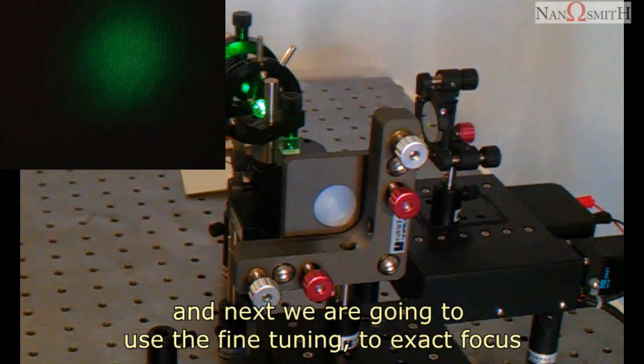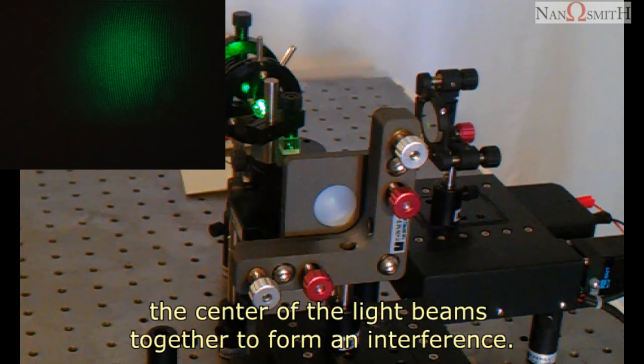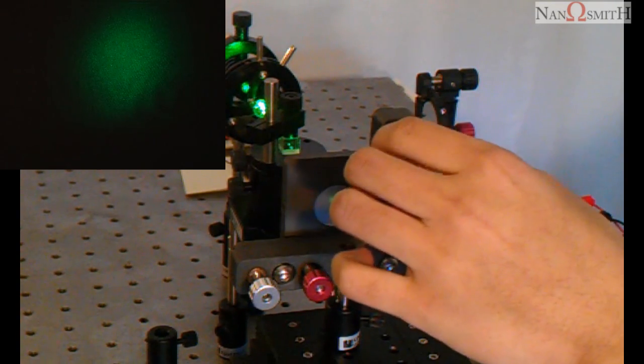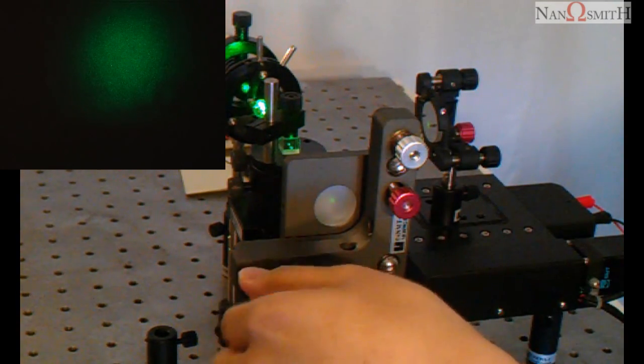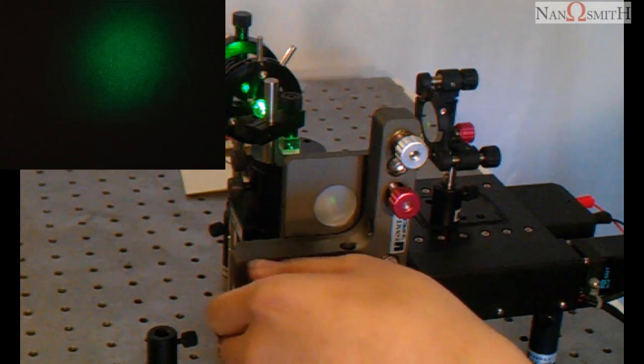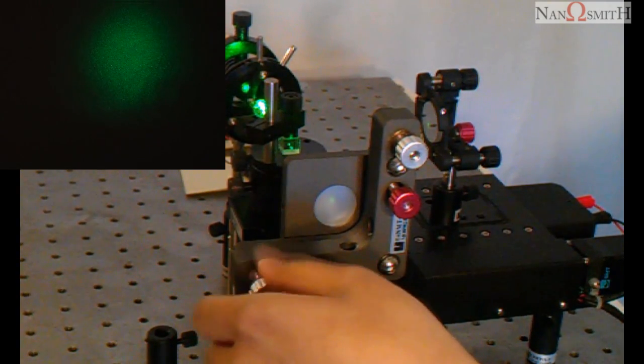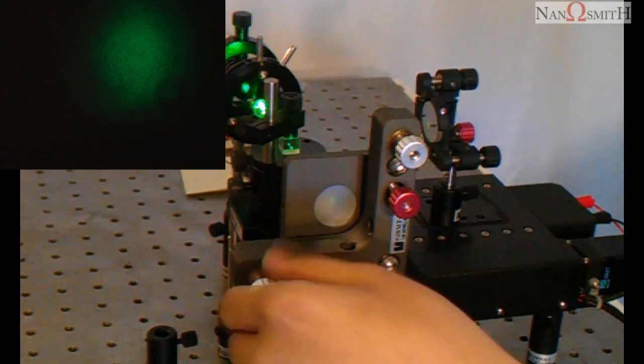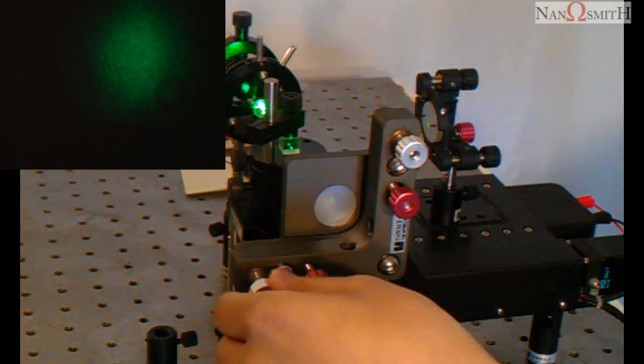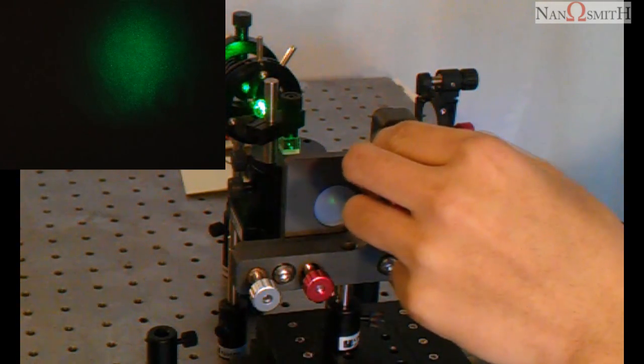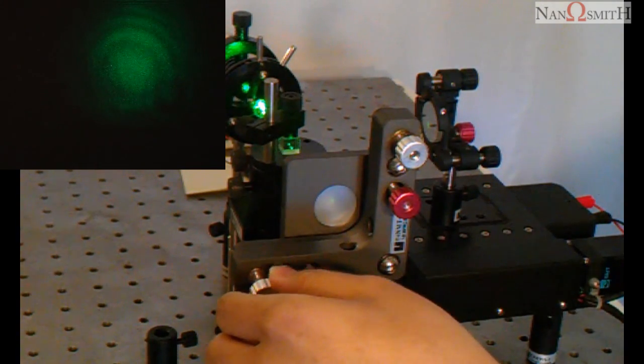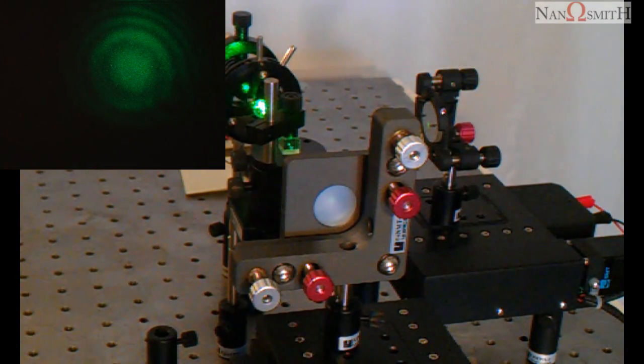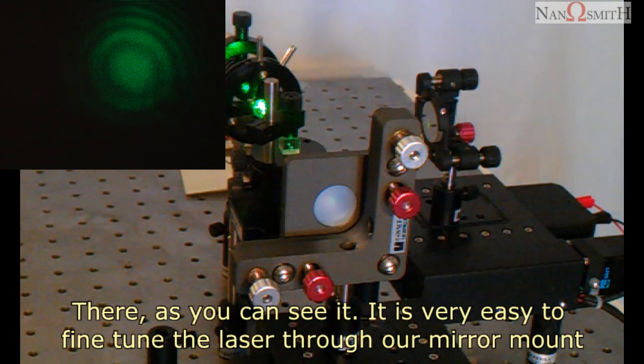And next, we are going to use the fine tuning to exact focus the center of the light beams together to form interference. Here it is. There. As you can see, it is very easy to fine tune the laser through our mirror mount.